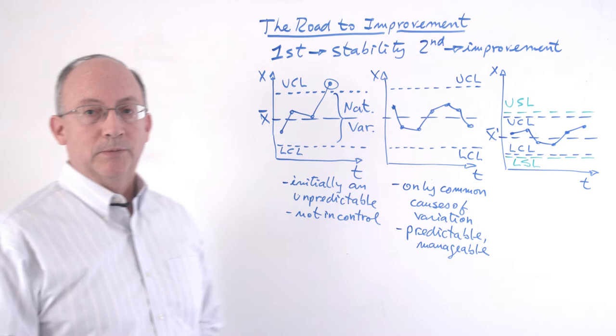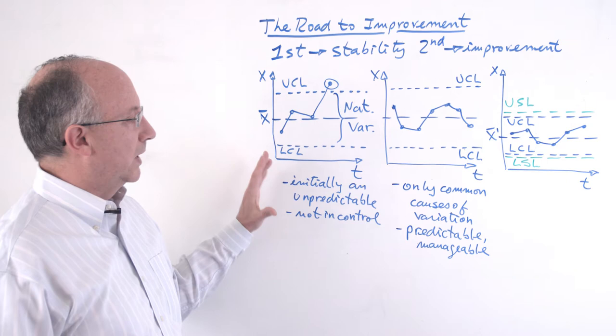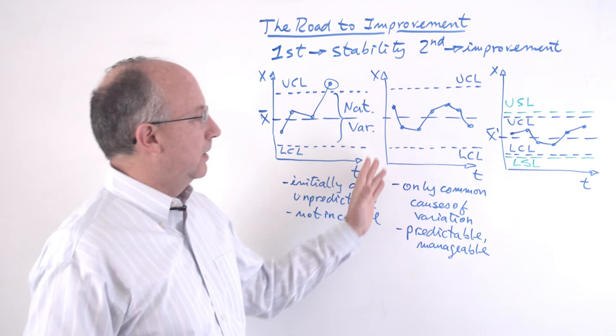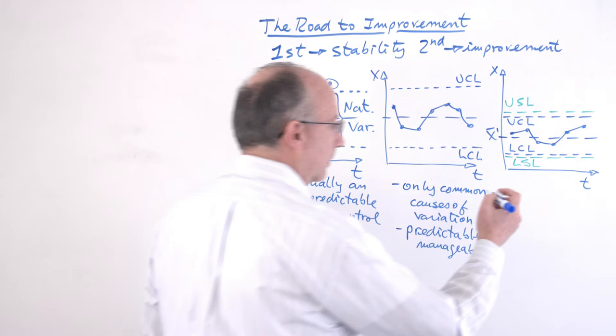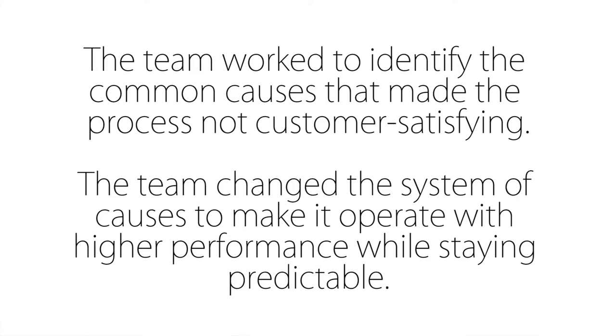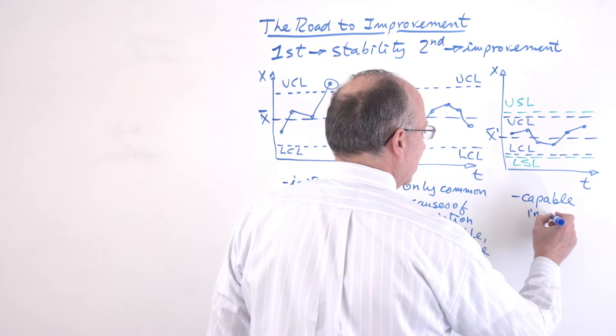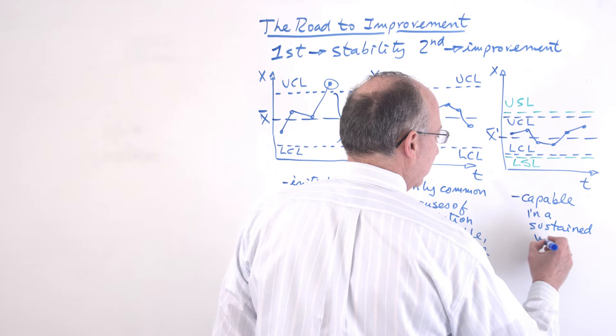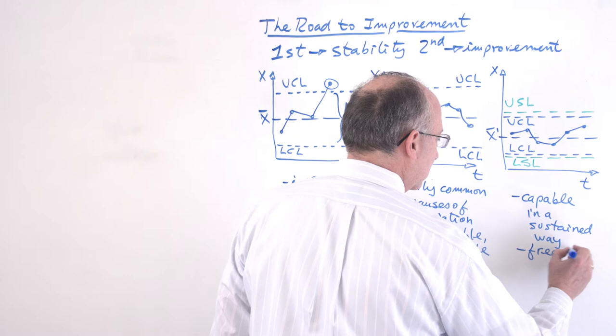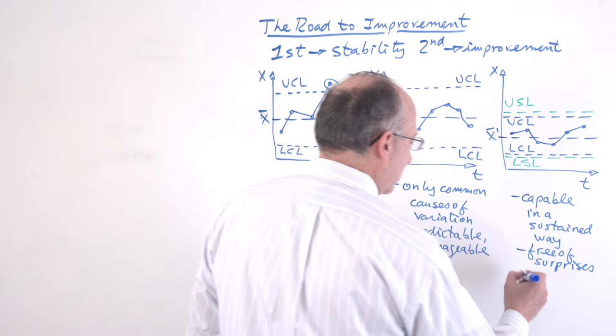This is how the road to improvement looks like. This is how you move from what unfortunately tends to be the most common situation to one that is in control, that is stable, and in addition to this, now we will have a process that is not only stable, but it is also capable, and it's going to be capable in a sustained way, that is, free of surprises, or another way of saying this would be predictable.